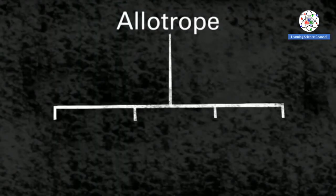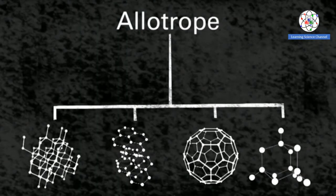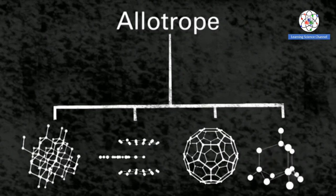An allotrope is simply a different form of the same element, each with distinct physical and chemical properties.